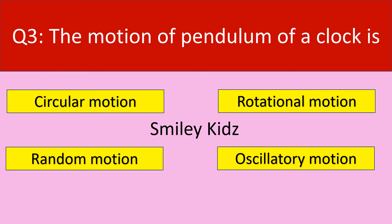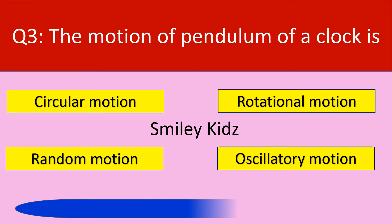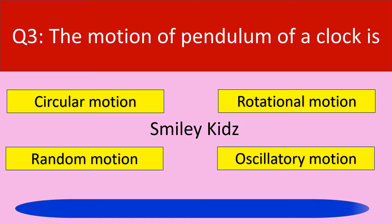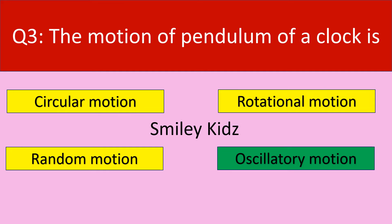Question number 3. The motion of the pendulum of a clock is. Your options are circular motion, rotational motion, random motion, oscillatory motion. Your time starts now. Your time is up. The right answer is oscillatory motion. The motion of a pendulum of a clock is oscillatory motion.